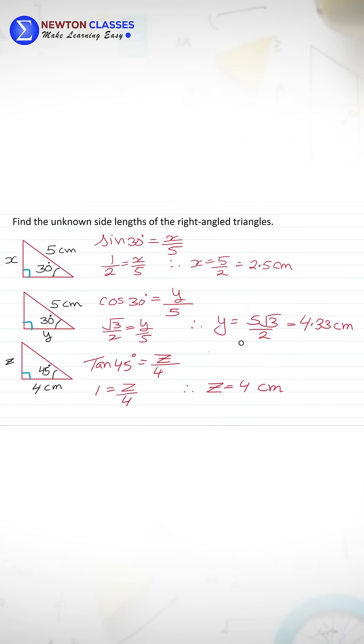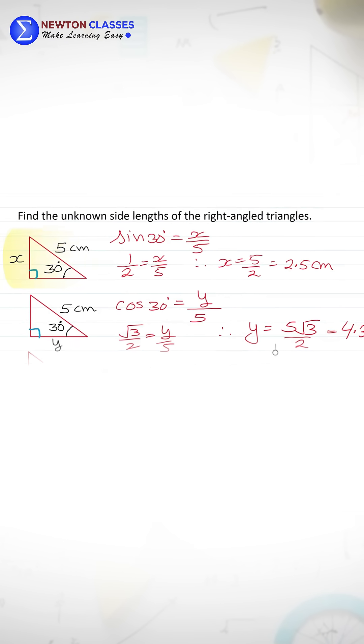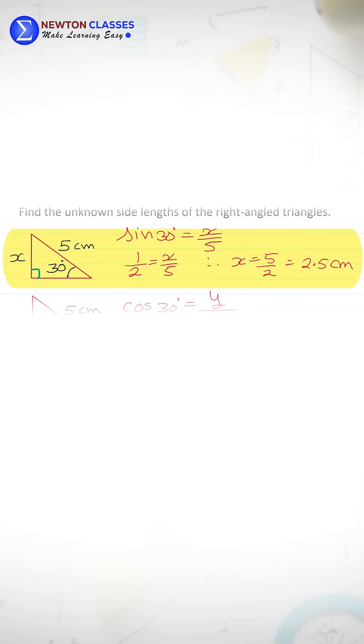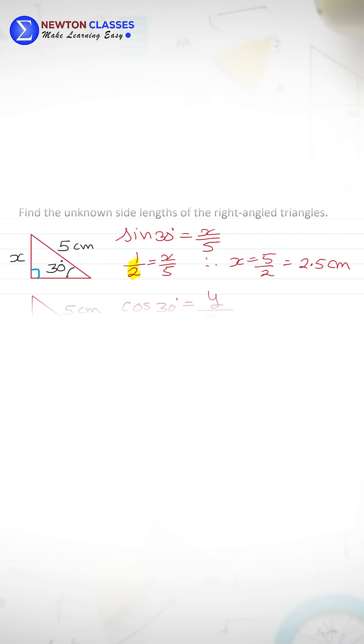Let us apply these three formulas to find different side lengths. So in the first triangle, we are supposed to find opposite. So sine 30 is X on 5, sine 30 is half. This is the Z value. X comes out to be 2.5 cm.